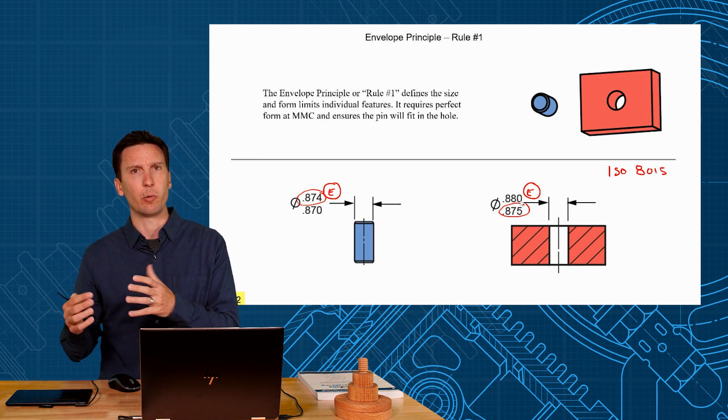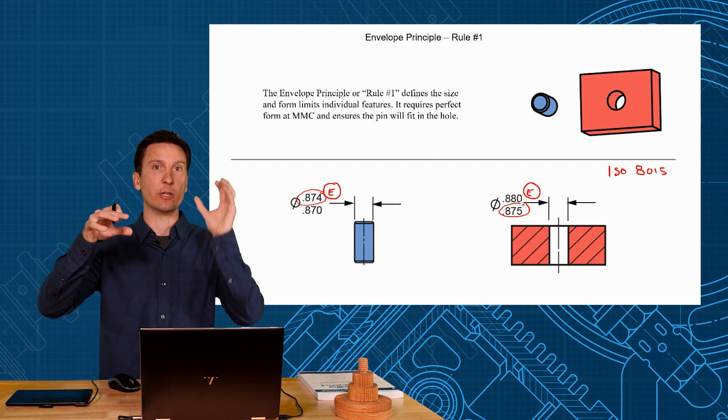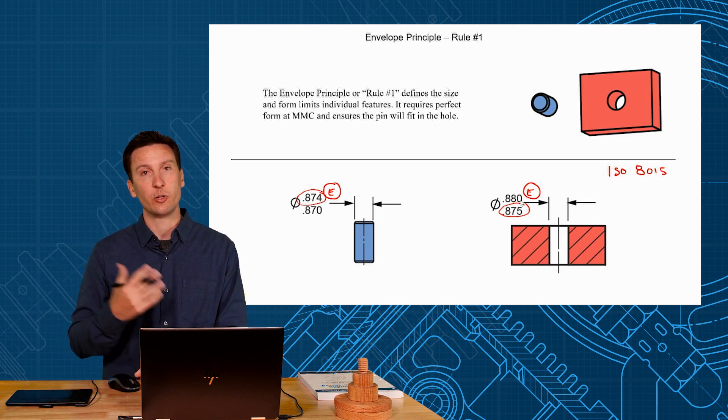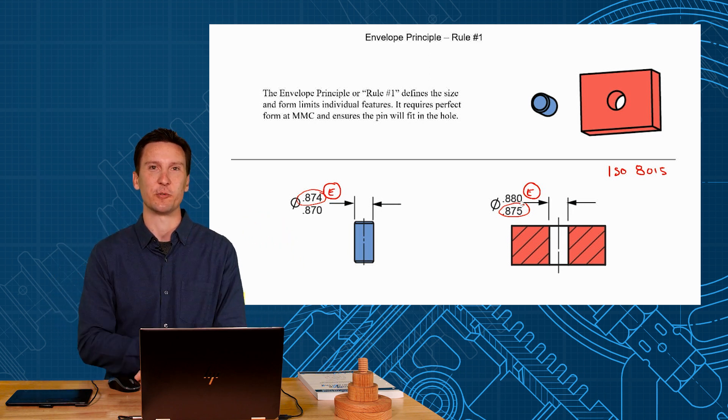ISO took a different approach. They thought the most basic thing should be the default and then you add requirements as you need them. So ISO you might see a lot of circle E's on your drawing and that's going to make sure that the pins and holes will fit together.